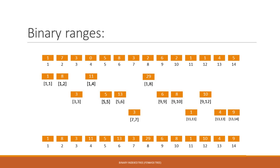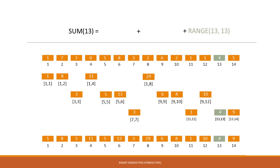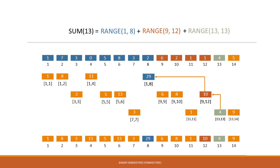Now how can we use this information to compute prefix sums? We want to compute the sum of the first 13 numbers. We start at position 13, which is the range 13 to 13. Previously we saw that we can divide the first 13 numbers into a range of 8 numbers, a range of 4 numbers, and a range of 1 number. So we have the single number already. To get to the range of the previous 4 numbers, we simply go up and left to the range 9 to 12. And to get back to the range with the 8 numbers, we go up and left again and now we have the first 8 numbers. We only have to add the numbers 29, 10, and 4.